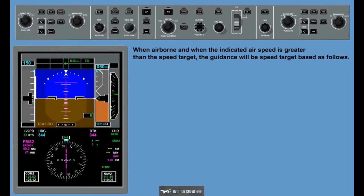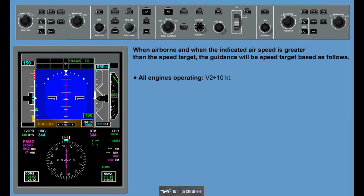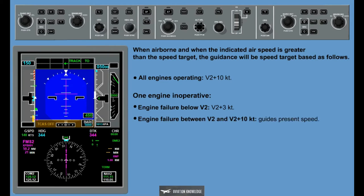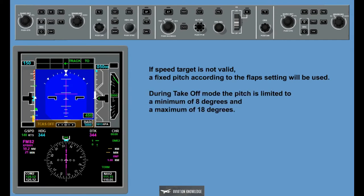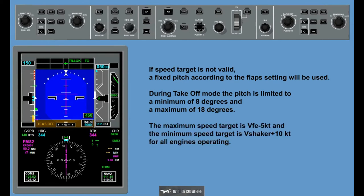The takeoff mode initial guidance is the flap pitch-based guidance and depends on the flap setting. When airborne and when the indicated airspeed is greater than the speed target, the guidance will be speed target based: engine failure between V2 and V2 plus 10 knots guides present speed; engine failure above V2 plus 10 knots guides V2 plus 10 knots. If speed target is not valid, a fixed pitch according to the flap setting will be used. During takeoff mode, the pitch is limited to a minimum of 8 degrees and a maximum of 18 degrees. The maximum speed target is VFE minus 5 knots; the minimum speed target is V-shaker plus 10 knots for all engines operating, and V-shaker plus 3 knots for one engine inoperative.